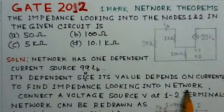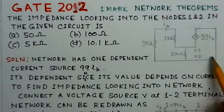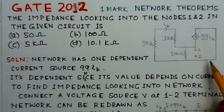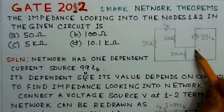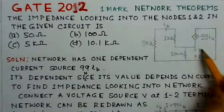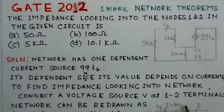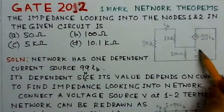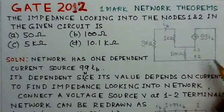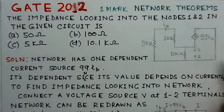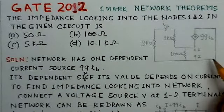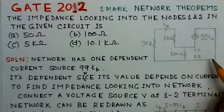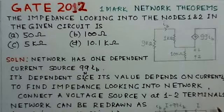To find the impedance looking into the network, what we do is connect a voltage source V at nodes 1 and 2 and find V divided by I. That will give the impedance looking into the network.